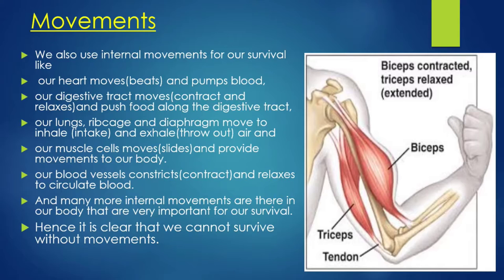Our muscle cells move and provide movement to our body. We have 206 bones, and muscles support our bones for movement. Our blood vessels constrict, contract, and relax to circulate the blood. Many more internal movements exist in our body that are very important for survival. Hence, it is clear that we cannot survive without movements — both external and internal.